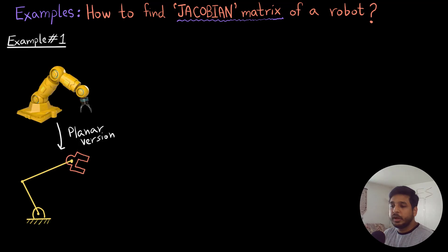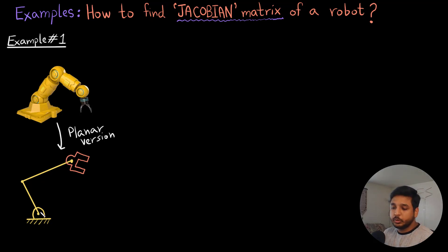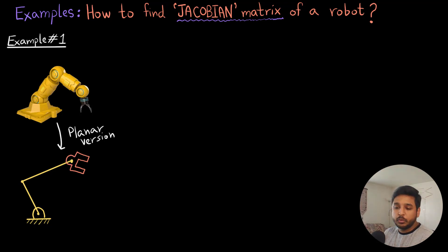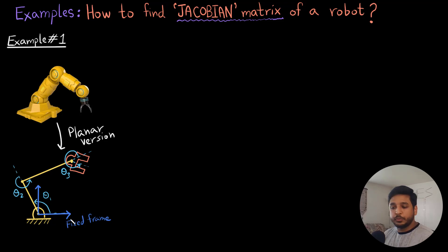For the first example I have this fancy yellow robot right here, which is a 3D robot, and I have converted it into a planar version down below which has three revolute joints — so it has three motors attached here, here, and here. It can revolve around these three points. I have marked out the fixed frame in blue and I have marked out the three angles theta 1, theta 2, and theta 3.